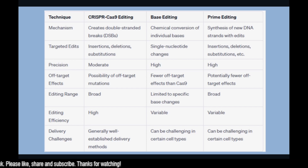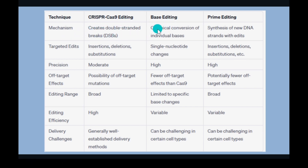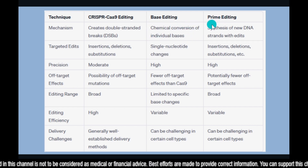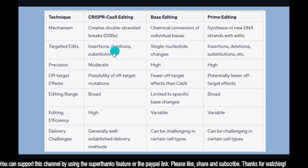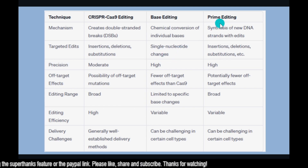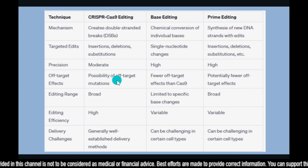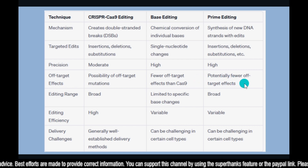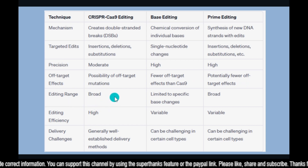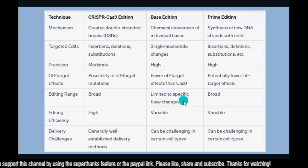Here you can see the table. In terms of mechanism, CRISPR-Cas9 creates double-stranded breaks, base editing uses chemical conversion of individual bases, and prime editing involves synthesis of a new DNA strand with edits. In terms of targeted edits, CRISPR-Cas9 involves insertions, deletions, and substitutions; base editing involves single nucleotide changes; and prime editing involves insertions, deletions, and substitutions. In terms of precision, CRISPR-Cas9 has moderate precision, while base editing and prime editing both have high precision. For off-target effects, CRISPR-Cas9 has possible off-target mutations, base editing has fewer off-target effects than Cas9, and prime editing has potentially fewer off-target effects. In terms of editing range, CRISPR-Cas9 has a broad range, base editing is limited to specific base changes, and prime editing is much broader than base editing.